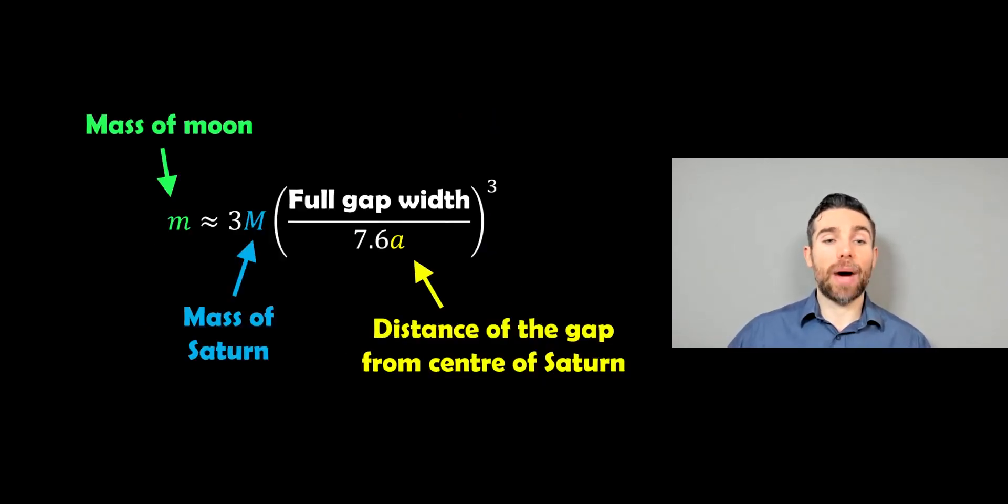And rearranged for the mass of the moon, we would have this. So mass of Saturn we would know because we've calculated that through different methods. We would know the distance of the gap from the center of Saturn because we know the dimensions of the rings. And the full gap width is something we would actually measure. So these were seen with the Cassini spacecraft, which is no longer there, but we could quite easily measure the full gap width. And that's easier to measure than the size of the moon because it's actually bigger than the moon. The moon is going to be smaller and it's going to be harder to see. So once we do all that, the only thing we don't know is the mass of the moon. And we can actually get a good approximation for that mass purely from these things here. Even if we can't see the moon, we can get a good idea for its mass using this method.